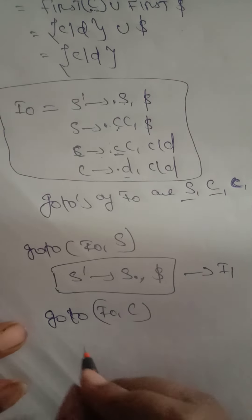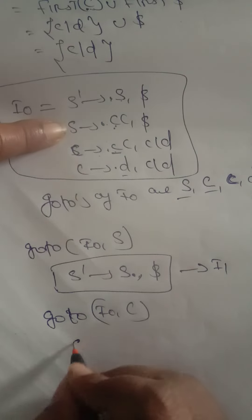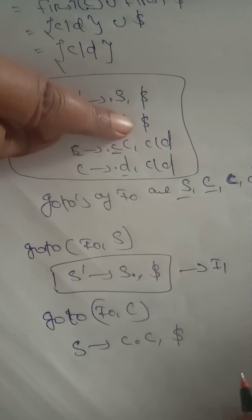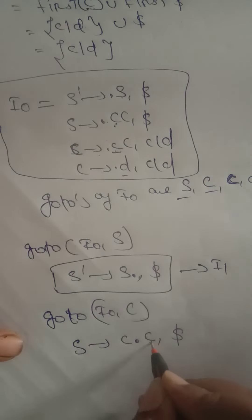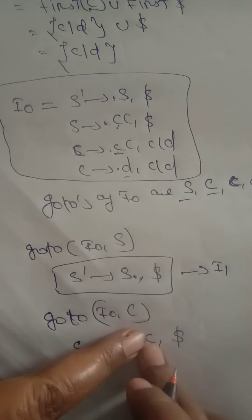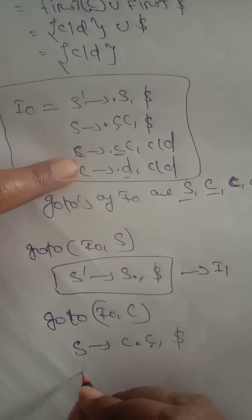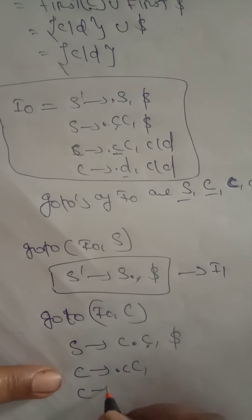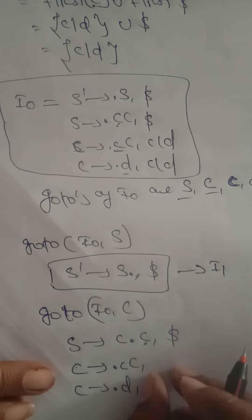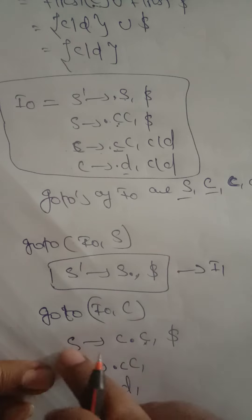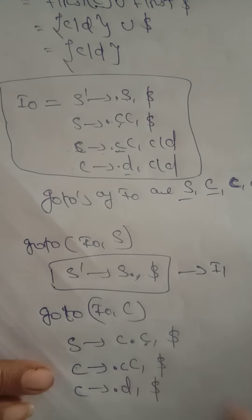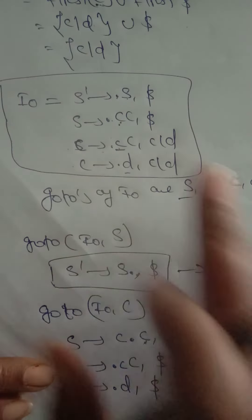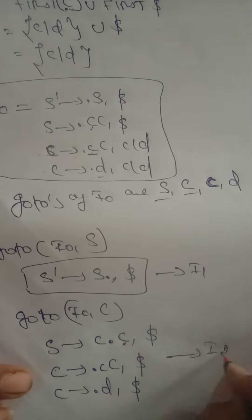Apply goto(I₀, C): S → C·C, $. After the dot we have C, which is a non-terminal, so copy C's productions from I₀: C → ·cC and C → ·d, with second component same as the referred production, which is $. This set is not the same as I₀ or I₁, so assign it the new name I₂.